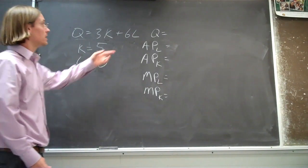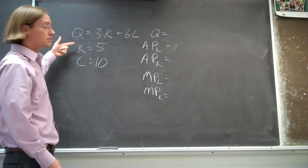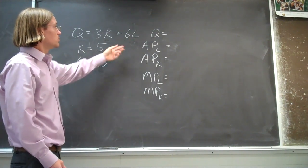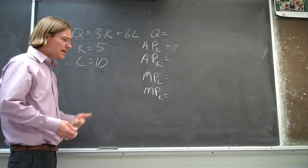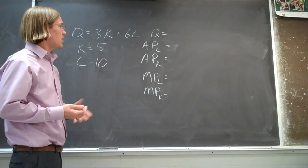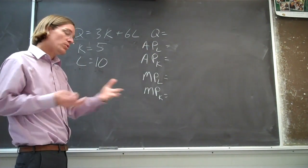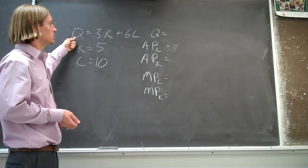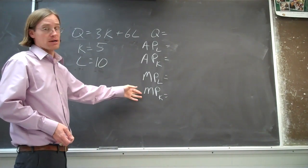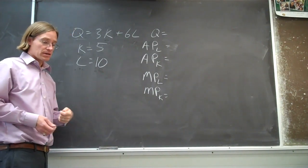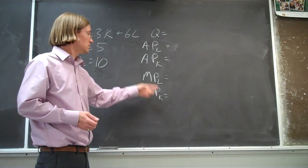Now we should be able to calculate the total quantity we're going to produce using five units of capital and ten units of labor. We should also be able to calculate the average product of labor and the average product of capital — that is, on average, how much output is produced by each unit of labor. We can also calculate the marginal product of labor and the marginal product of capital, which is the amount of output you get from that next unit of either capital or labor that you put in.